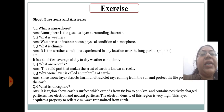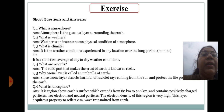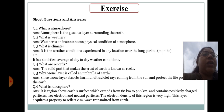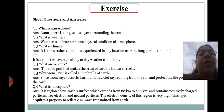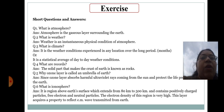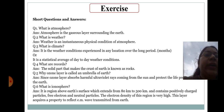The second question is: what is weather? Weather is an instantaneous physical condition of atmosphere. You can search all these questions from earlier YouTube videos. Now, what is climate? Climate is the weather condition experienced in any location over a long period of months, or it is a statistical average of day-to-day weather conditions.